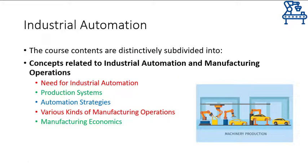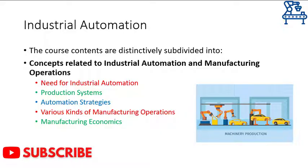The whole course is divided into three major sections. The first section will be related to the discussion on concepts of industrial automation and manufacturing systems that are used in modern day industries. We will discuss the need for industrial automation, various production systems, automation strategies and technologies, and how these strategies influence manufacturing operations and economics, and what manufacturing systems originate from the induction of automation technologies into the modern day industry.